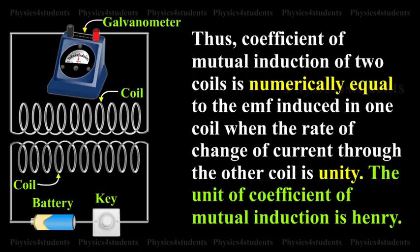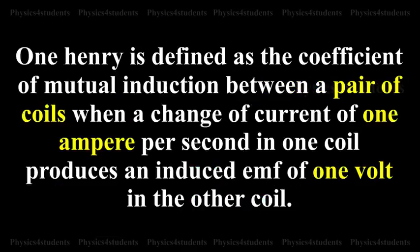The unit of coefficient of mutual induction is Henry. One Henry is defined as the coefficient of mutual induction between a pair of coils when a rate of change of current of 1 A/s in one coil produces an induced EMF of one volt in the other coil.